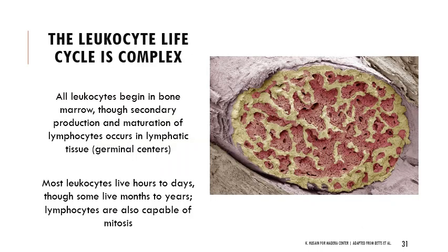There are many different cells in the white blood cell category, all beginning their life in bone marrow. Secondary production and maturation of B and T cells — lymphocytes — occurs in lymphatic tissue in germinal centers. Leukocytes have a much more varied lifespan than erythrocytes: most live hours to days, some live months to years. B and T lymphocytes are also capable of mitosis — they can make copies of themselves and pass on acquired information, important for the immune system.